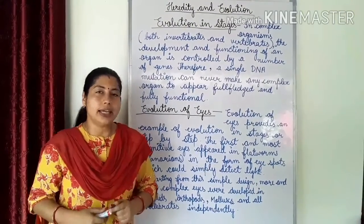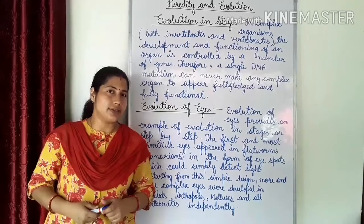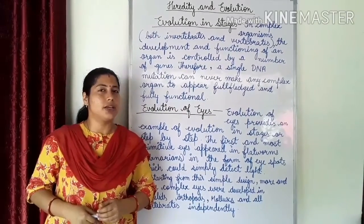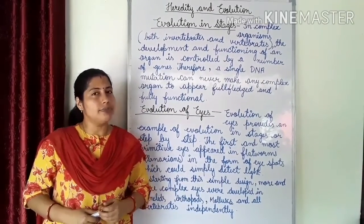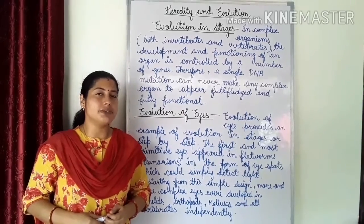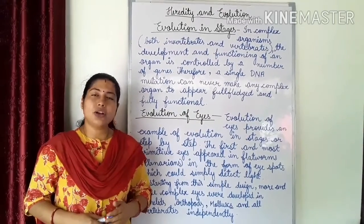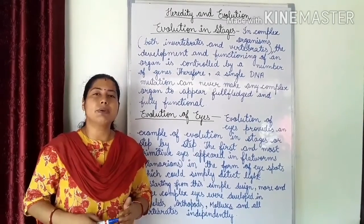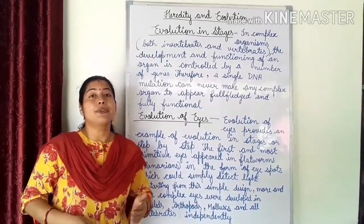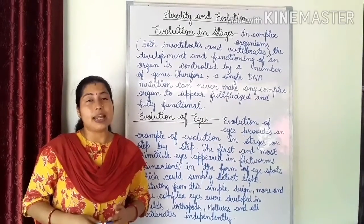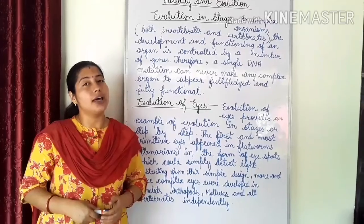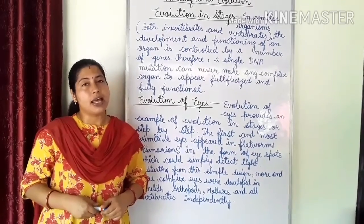In complex organisms, both vertebrates and invertebrates. Vertebrates are the organisms that have a vertebral column — organisms that have a backbone. Like birds, reptiles, and mammals — we are all vertebrates.